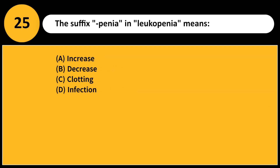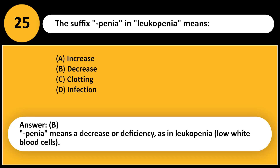The suffix -penia in leukopenia means: A. Increase B. Decrease C. Clotting D. Infection. Answer: B. -Penia means a decrease or deficiency, as in leukopenia — low white blood cells.